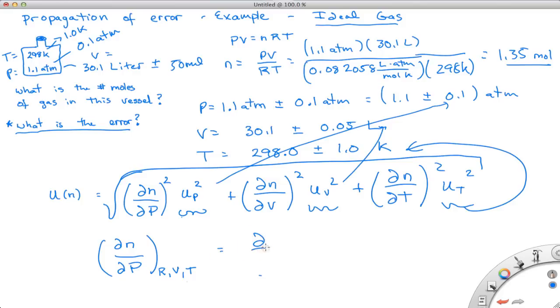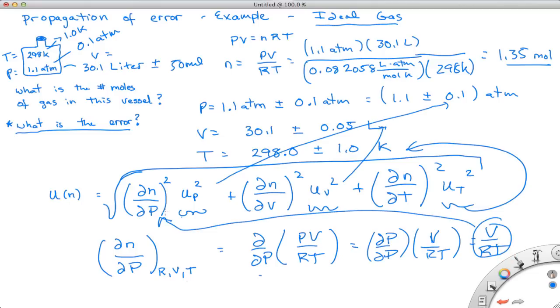So it's the partial with respect to pressure of PV over RT. And these are all, volume, R, and T are all constant, P is the only thing that varies. So the partial with respect to DP, DP is 1, and then we get V over RT. So this is just V over RT. So now we have V over RT that we plug in right there, we take the square of everything, we do this for all the variables, and then that's how we can generally determine the error associated with this.